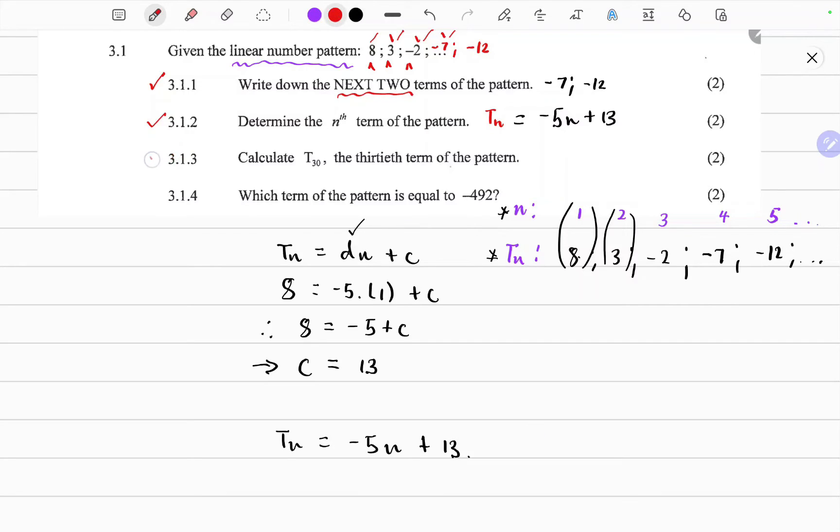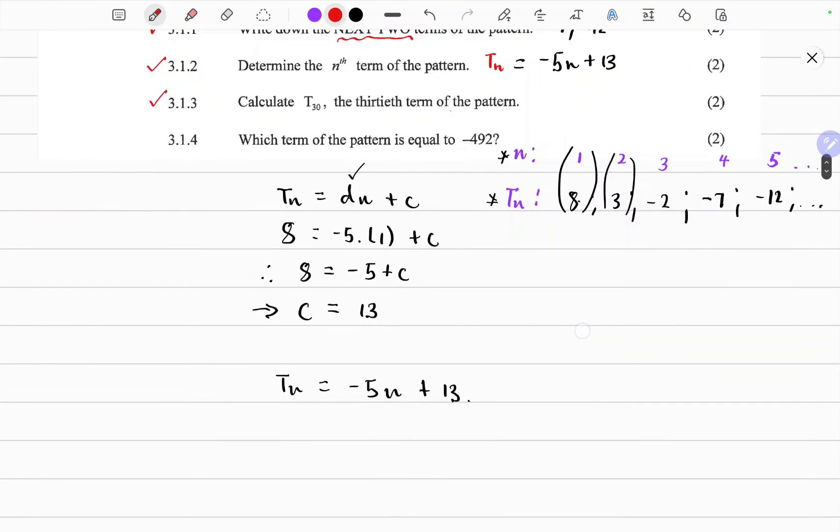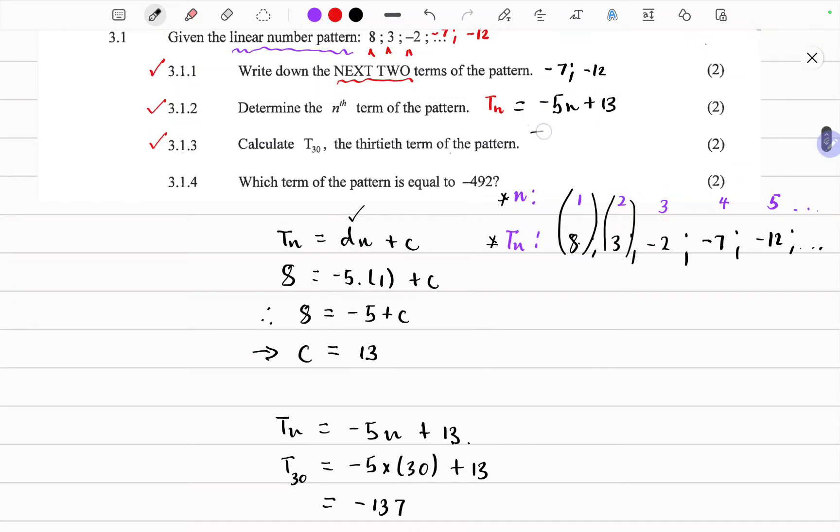So let's have a look at the third question. It says calculate the 30th term of the pattern. So it's just a matter of substituting n with 30. So Tn is equals to minus 5 times 30 plus 13. And that should give us negative 137. So it means that the 30th term T30 is equals to negative 137.